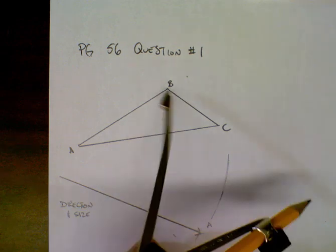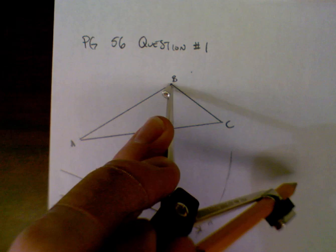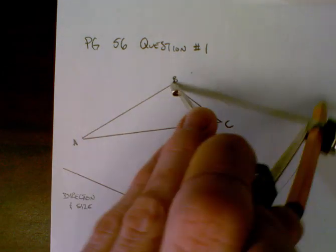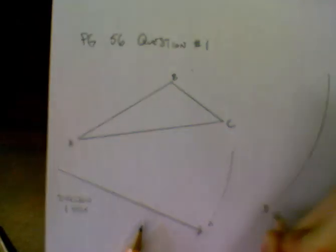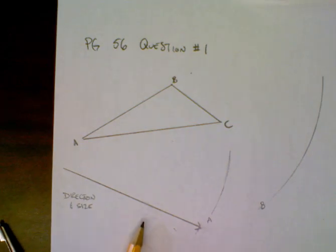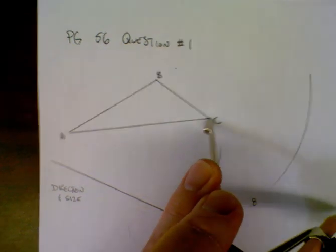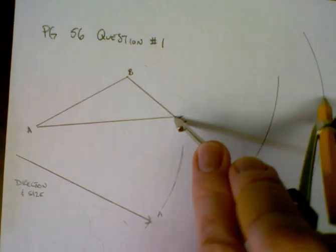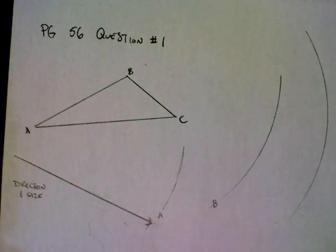Now I'm going to use the compass again with the same distance set — that's the size of the arrow. I put the point on vertex B of my original figure and draw another arc, labeling it arc B. I'm only drawing a small piece of the arc because I know the figure is traveling to the right, so I only need the arc over there. Then I do my third arc, arc C — that's the distance that point C has to travel — and label it arc C.